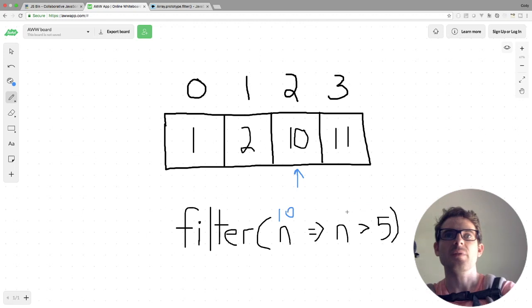Finally, we get to an element which is greater than 5, which is 10. So we know that 10 is going to be returned in our new array, so we'll keep track of that one.